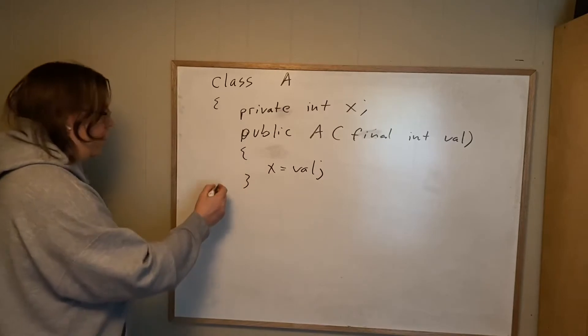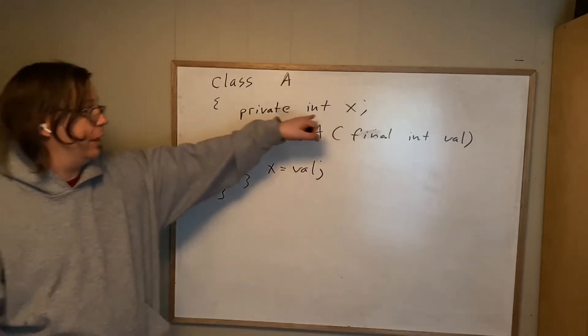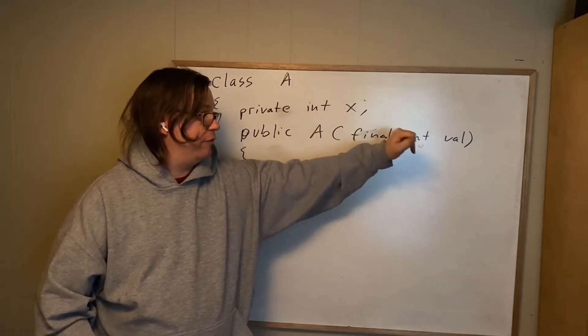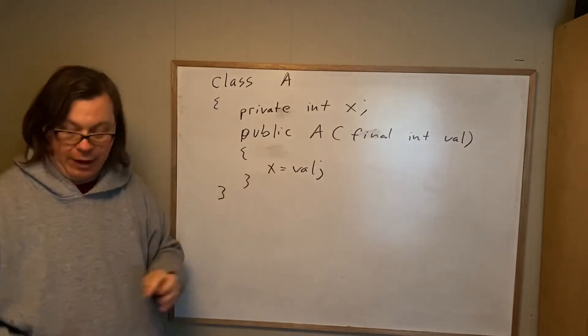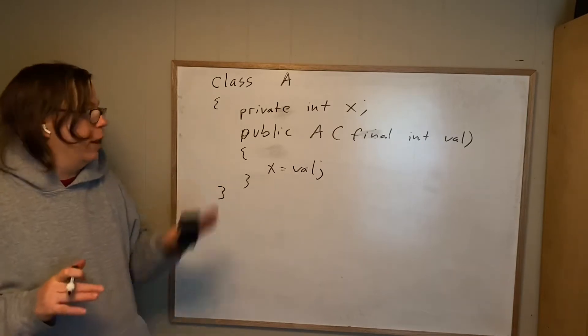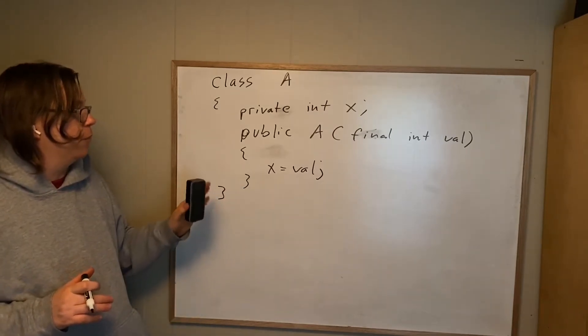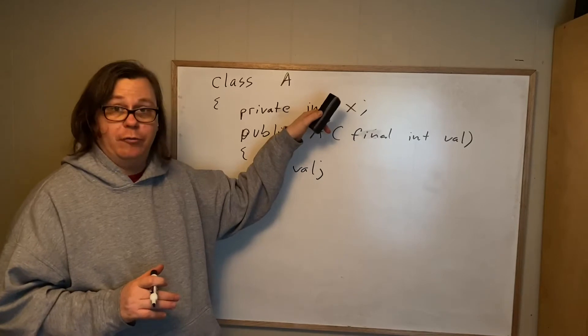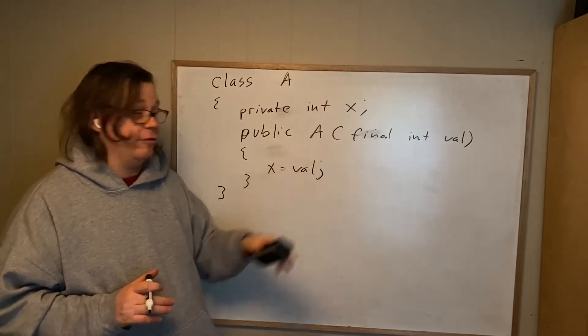Alright. So it's a common-looking constructor, right? We have an instance variable x, we pass in a value val, and we set x to be val. A few things going on here. The first purpose of a constructor is to initialize the object. So that's what this line does. It initializes the object.